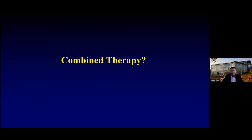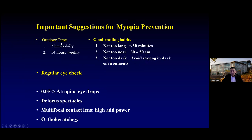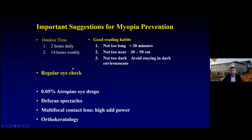What is the best therapy? Possibly a combined therapy. Outdoor time: we recommend spending at least two hours a day — let the kids play, that's what they're supposed to do. When we were growing up, we didn't spend six to eight hours looking at a phone. That's unnatural. So do things that are natural for kids, let them play. Good reading habits: don't read too long, take frequent breaks, don't hold it too close, don't read in a dark setting. Regular eye check is critical. Atropine eye drops are an option. Defocusing spectacles are not FDA approved in this country and are still under investigation. Multifocal contact lenses and ortho-K are other possible options.